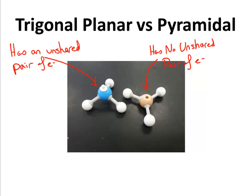So what's the difference between trigonal planar and trigonal pyramidal? They both have three elements coming off the central atom — we saw boron trifluoride and nitrogen trifluoride. The difference is that nitrogen had that extra unshared pair of electrons on the central atom, which caused repulsion of the other electron pairs downward into a pyramidal shape. In the absence of that lone pair, as in boron, the bonds spring upward and form 120-degree bond angles.